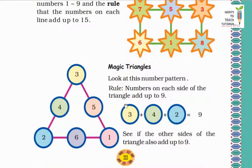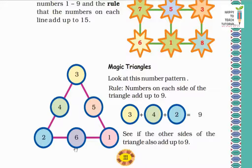Now the next topic is magic triangles. Look at this number pattern. The rule is: the numbers on each side of the triangle add up to 9. We have to check if all sides of the triangle add up to 9. Let's verify: 2 plus 6 plus 1 equals 9. Then 3 plus 5 plus 1 equals 9. So all sides of the triangle add up to 9.